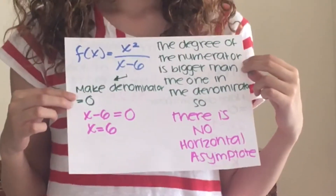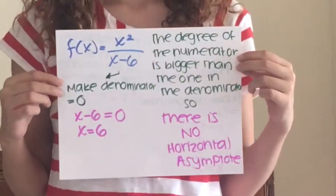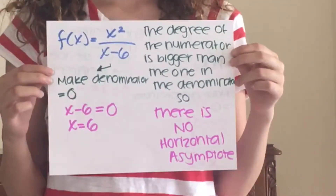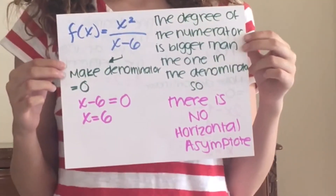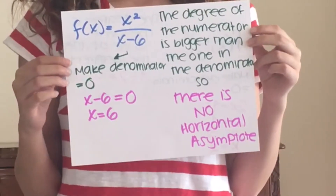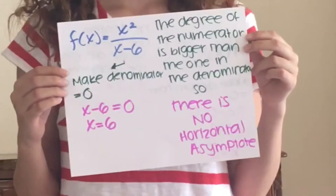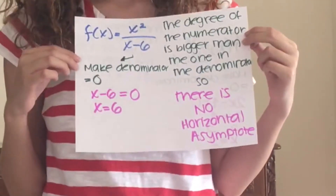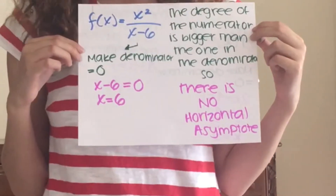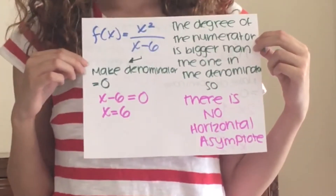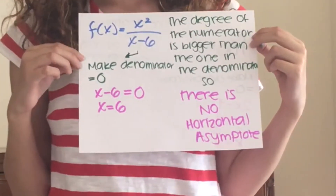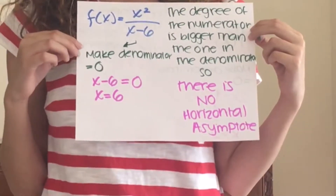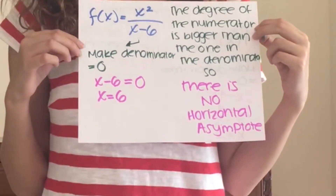Lastly, x squared over x minus 6. The degree of the numerator is bigger than the degree of the denominator, so there is no horizontal asymptote. To get the vertical asymptote, we make the denominator zero: x minus 6 is equal to zero, so x is equal to six.